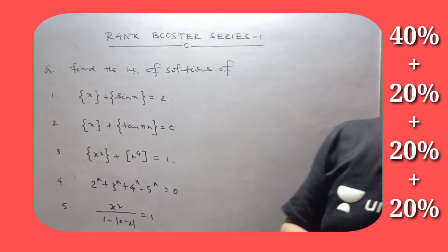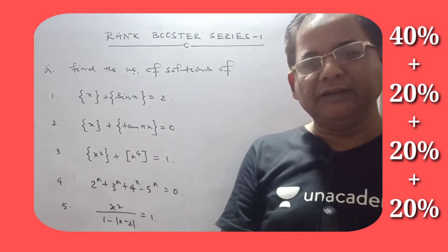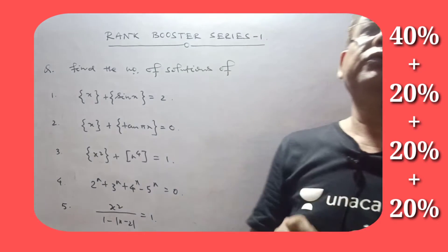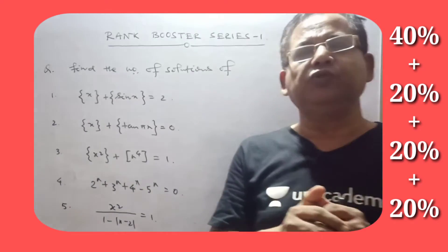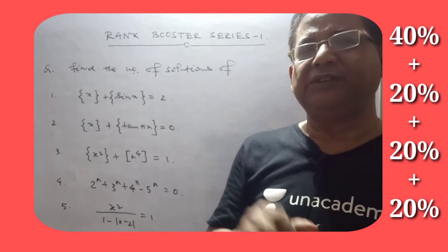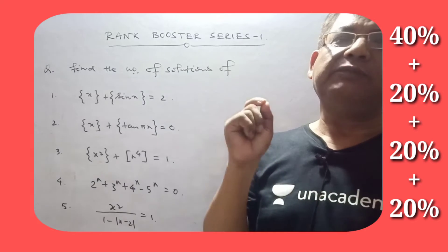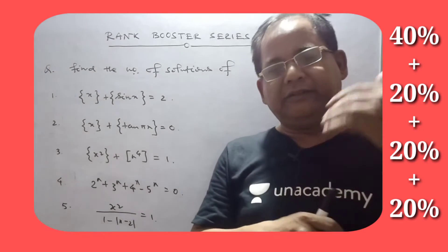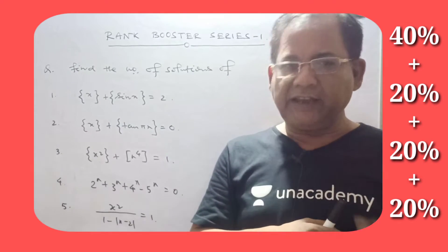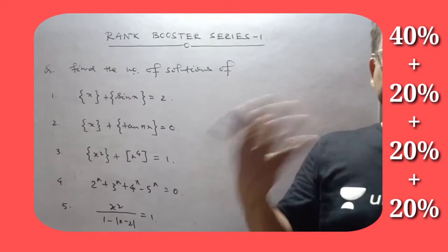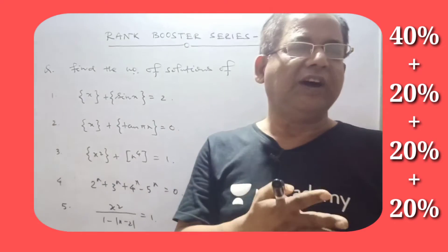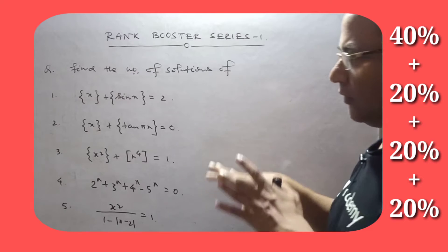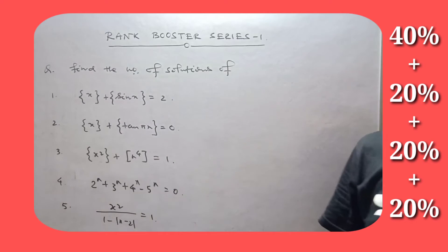So my dear friends, according to the rule: 40% of students find questions very easy (direct way), 20% find them medium level, another 20% find them difficult level, and the last 20% is too hard — that is for the top 200 rankers. That is why I have chosen these questions. In this video we will discuss five questions.